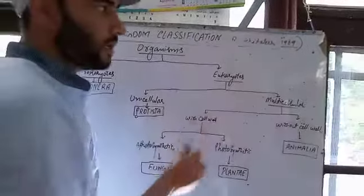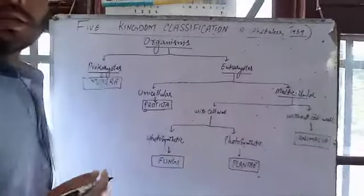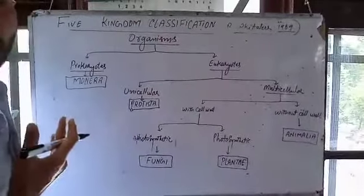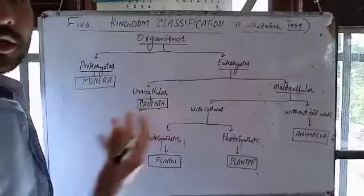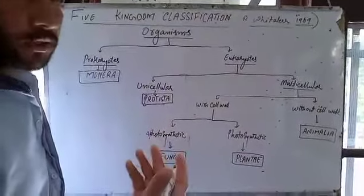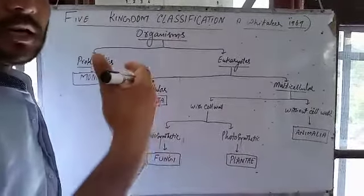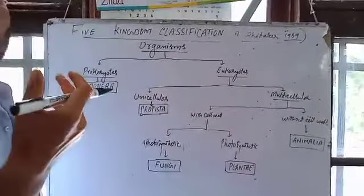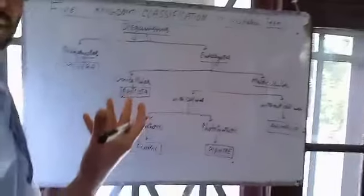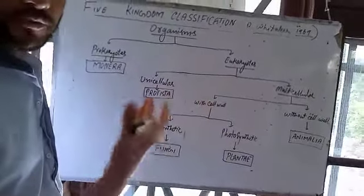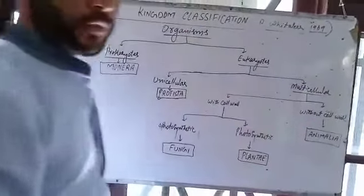First it was a two-kingdom system of classification, which was put forth by Aristotle. That means only plants and animals — all organisms on the earth were categorized either into plants or animals. Then another scientist, Ernest Haeckel, came and recognized some unicellular organisms distinct from plants and animals, and created a third kingdom.